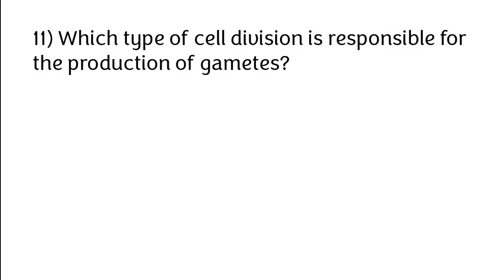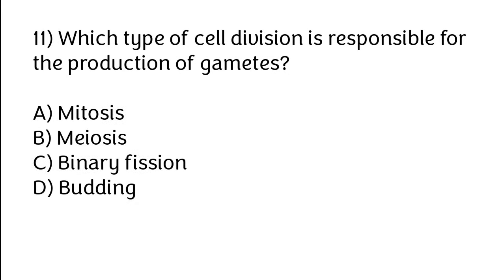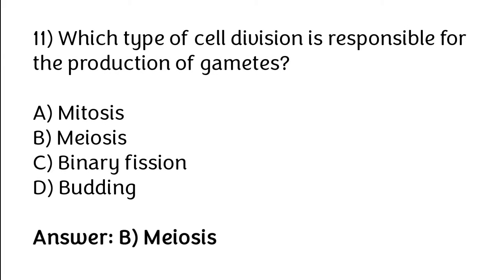Which type of cell division is responsible for the production of gametes? Options: mitosis, meiosis, binary fission, budding. The correct answer is option B — meiosis is the type of cell division responsible for the production of gametes.